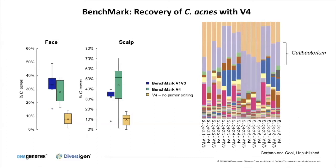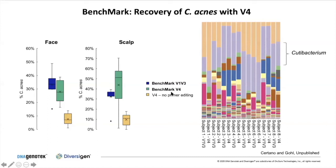We've seen primer editing rescue other taxa as well — for example, a particular TM7 taxon in a primate microbiome study that also has a mismatch to V4 amplification primers recovers specifically when we incorporate primer editing. This has been extended to the skin microbiome in work done at Diversigen by Amanda Stratano. For a variety of different body sites, incorporating primer editing with proofreading polymerases rescues detection of C. acnes to levels similar to V1-V3. Paired donor samples analyzed with V1-V3 or V4 show very similar levels of Cutibacterium when using V4 as long as these optimizations and primer editing have been implemented.